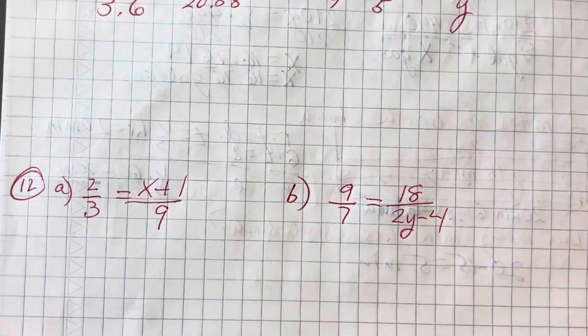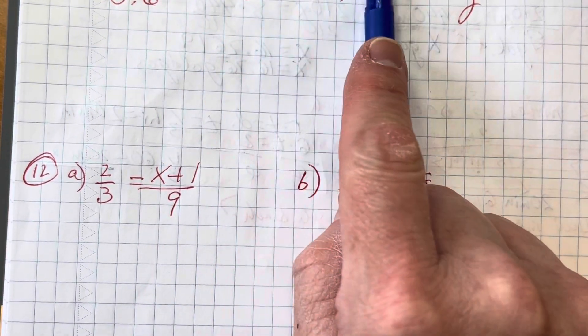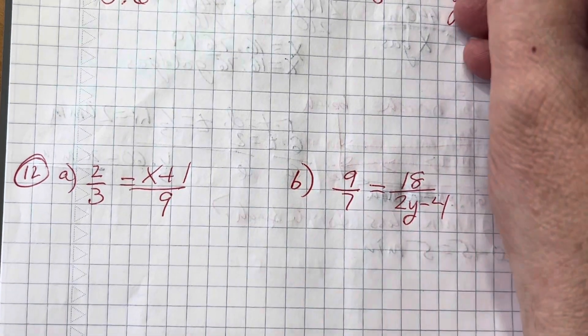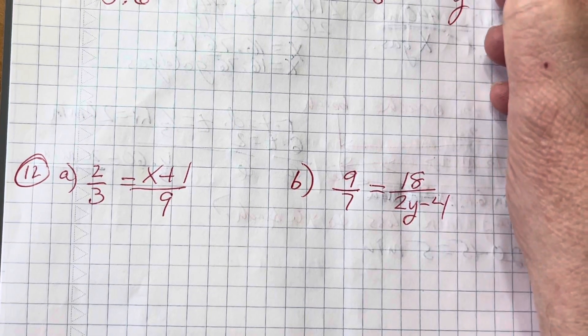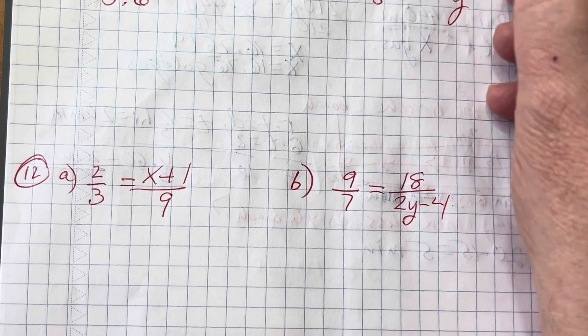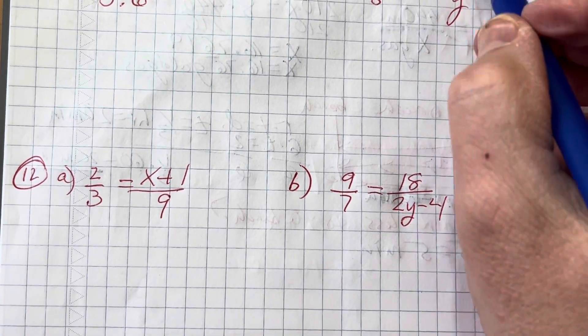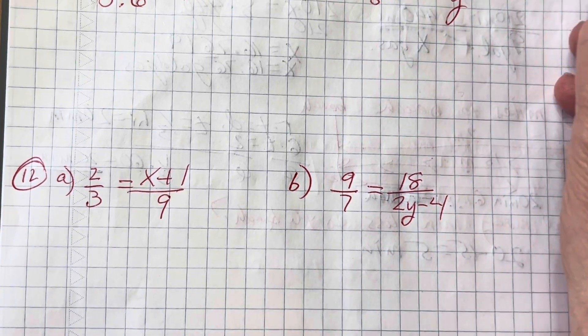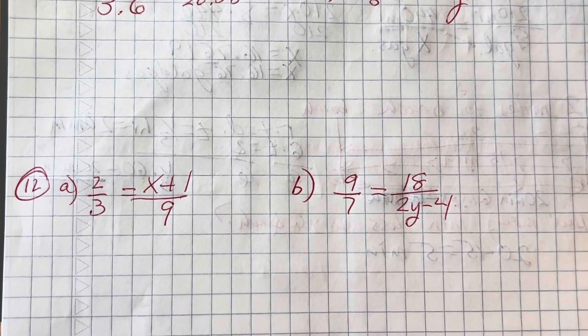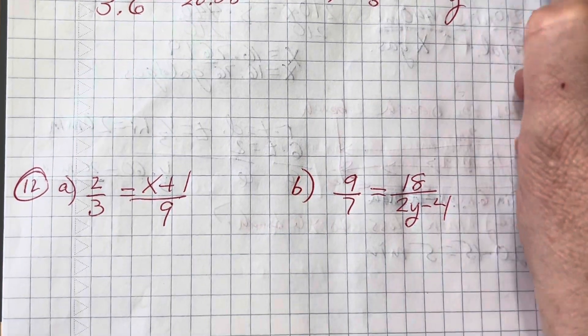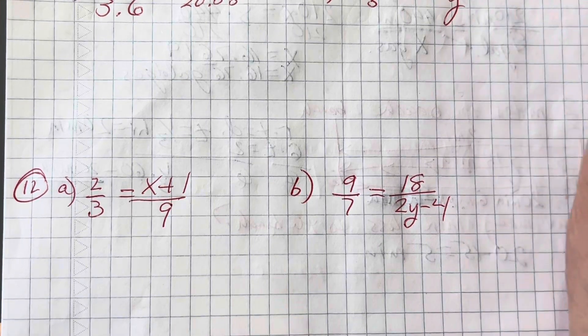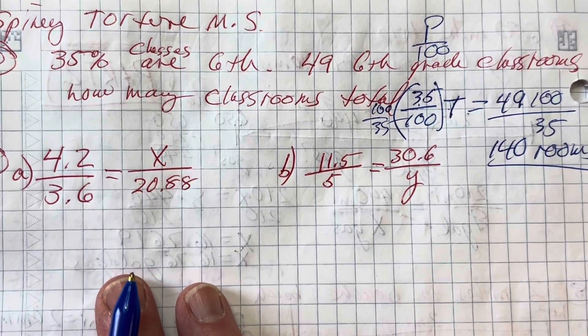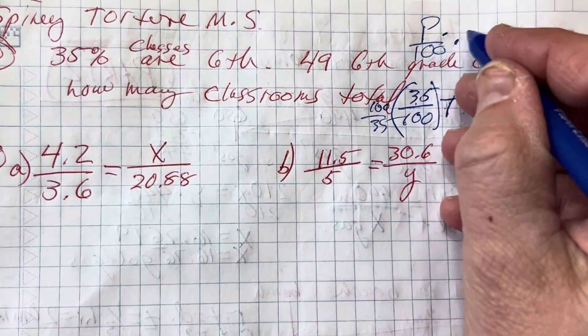Let's go number 10. Hold on to your hats. We're going to try to do this as quickly as we can. 35% of the classes are 6th graders. 49 6th grade classrooms. How many classrooms are total? Well, I know that if I have 35% of the total classrooms equals 49. This is 35% of all the classrooms. It's 49. I simply am going to multiply both sides by 100 over 35. So I have 4900 divided by 35. That is 140 classrooms.